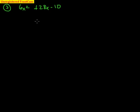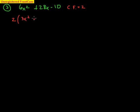Here's our next problem: 6x squared plus 28x minus 10. I have an a value, so the first thing I'm looking for is a common factor. 6, 28, and 10 are all divisible by 2. Pull that common factor out. What we're left with is 2 times the quantity 3x squared plus 14x minus 5. Now we need to factor that new trinomial.